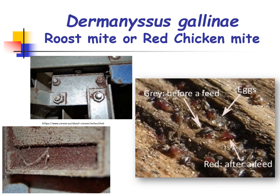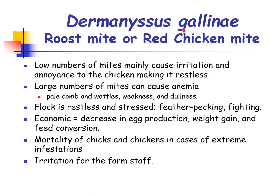A characteristic of Dermanyssus gallinae, or the red chicken mite, is that during the day they hide in the environment, but at night they attack the birds. For the veterinary significance, low numbers of mites mainly cause irritation and annoyance to the chicken, making it restless. When there is a large number of infestation, it can cause anemia, since these mites are blood suckers, resulting in pale comb and wattles, weakness and dullness.